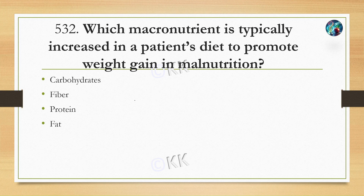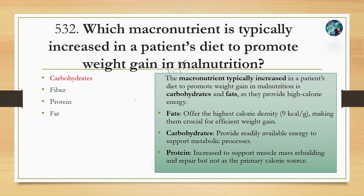Which macronutrient is typically increased in a patient's diet to promote weight gain in malnutrition? Option A: carbohydrate, Option B: fiber, Option C: protein, Option D: fat. The correct answer is Option B, carbohydrates. To treat malnutrition, carbohydrate and fat are preferred because they have high calorie density.